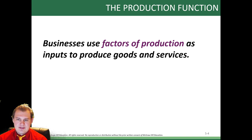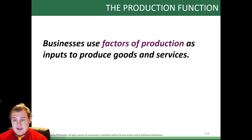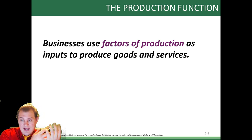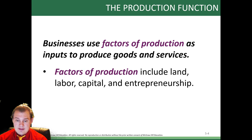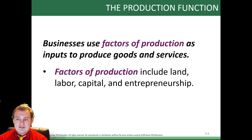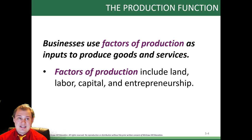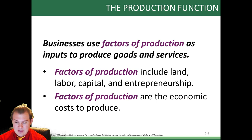Businesses use factors of production — inputs — to produce goods and services. As we remember from Chapter 1, it takes things to make stuff. We get inputs and we make outputs. The question is, what's the most efficient way to get these inputs to make decent outputs? Overall, it's going to take land, labor, capital, and entrepreneurship. Depending on how you change that combination, some ways are more effective than others. You can have a business that's very land-intensive, very labor-intensive, very capital-intensive, or one that just requires good management. Factors of production are the economic cost to produce.